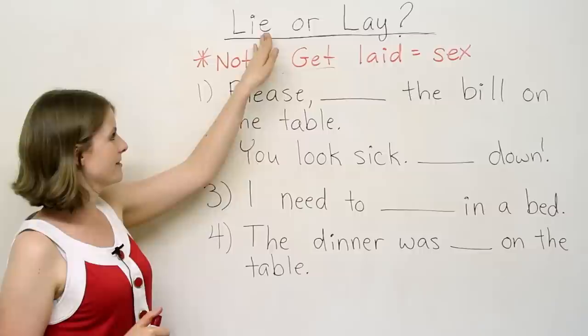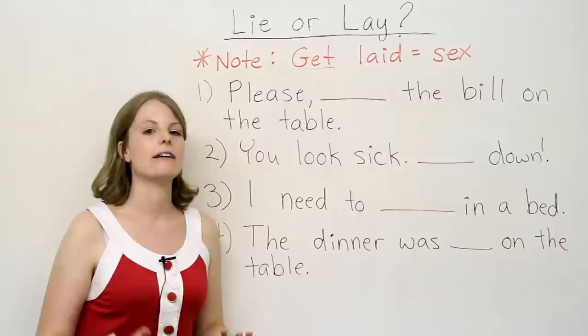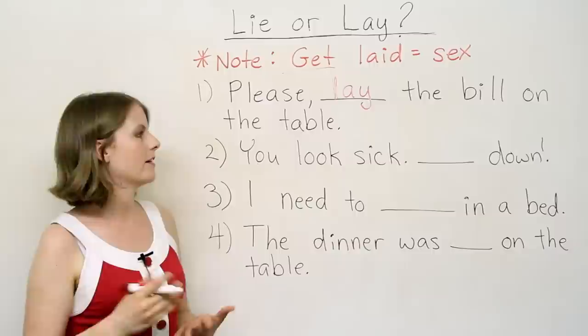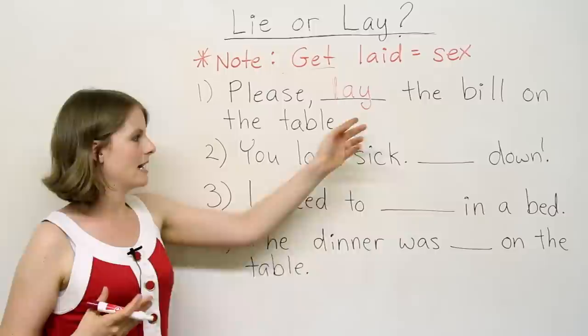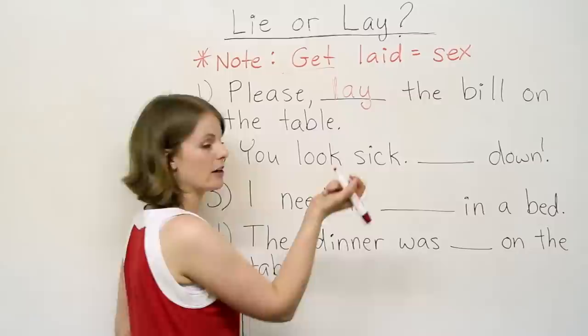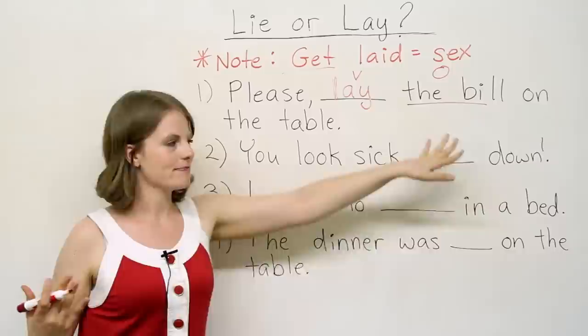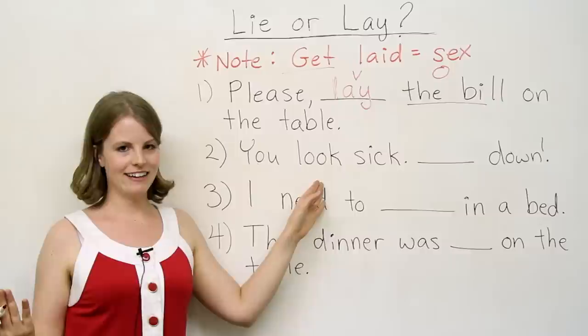One. Please, the bill on the table. Do you think it's lie, as in rest or recline, or lay, as in put something down? Please lay the bill on the table. This is lay, present tense, and it means to put down. And how did I know? In this case, we don't have a subject. We have our verb, lay, and we have an object, which is the bill. So the verb is followed by something.